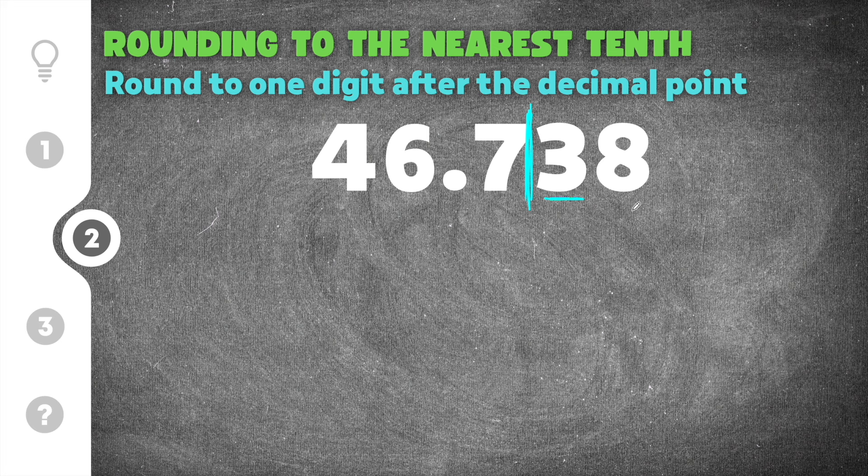And I'm going to look at the number behind that line. In this case, this three is less than five, so it's between zero and four, which means that this seven doesn't change and it stays the same. So I'm going to write stays the same here. So when I rewrite my number for rounding, I'm going to keep 46.7 because the three means the seven is going to stay the same.